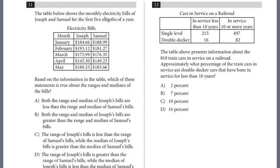The table above shows the monthly electricity bills of Joseph and Samuel for the first five months of the year. We have Joseph and Samuel, different months, and the amounts. Based on the information, which of the following statements is true about the ranges and medians? We're just looking for ranges and medians — that's a good indication of where to start.